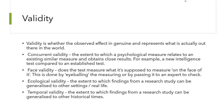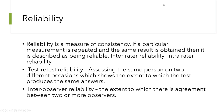Face validity is essentially an eyeballing of the measures, perhaps by an expert. If you construct a pain or anxiety scale, you might send it to a pain or anxiety expert to assess whether it actually measures what it's supposed to measure. Ecological validity is the extent to which findings from a research study can be generalized to real-life settings — laboratory settings unfortunately typically do not have very good ecological validity. Temporal validity refers to whether findings can be generalized across different historical time periods.